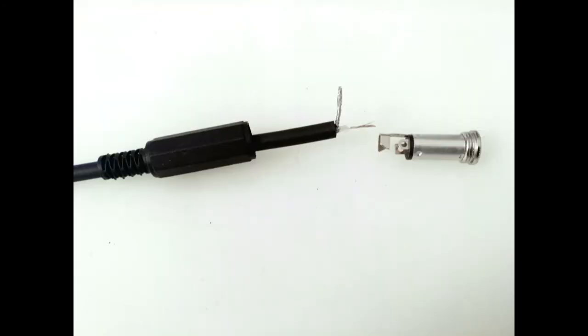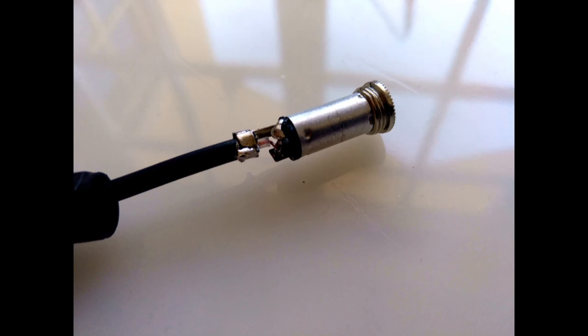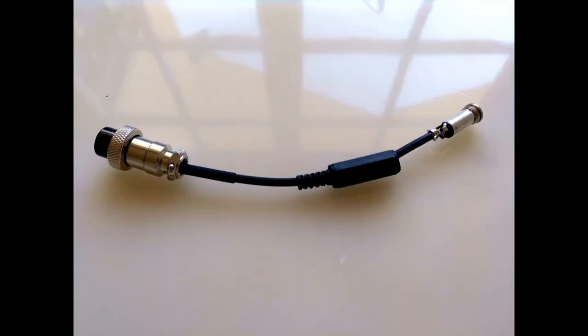Solder the inner conductor to both the round and square hole contacts on the jack connector. Solder the shield to the sleeve on the jack connector. Close the connectors.